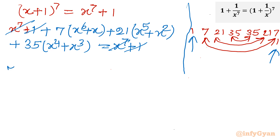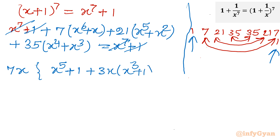Now we see what is common. Obviously 7x is common, so taking 7x out gives the bracket: (x^5 + 1). From the 21 term, taking x^2 out gives 3(x^3 + 1). And from the 35 term, taking x^3 out gives 5x^2(x + 1). So we write: 7x[(x^5 + 1) + 3x(x^3 + 1) + 5x^2(x + 1)] = 0.